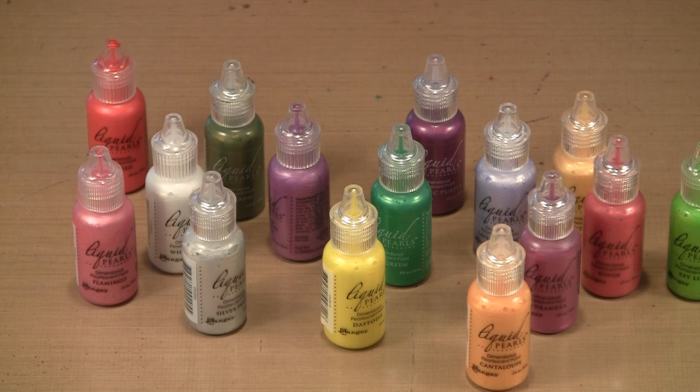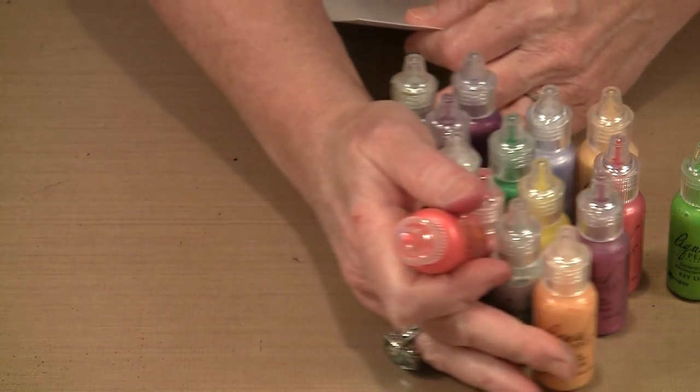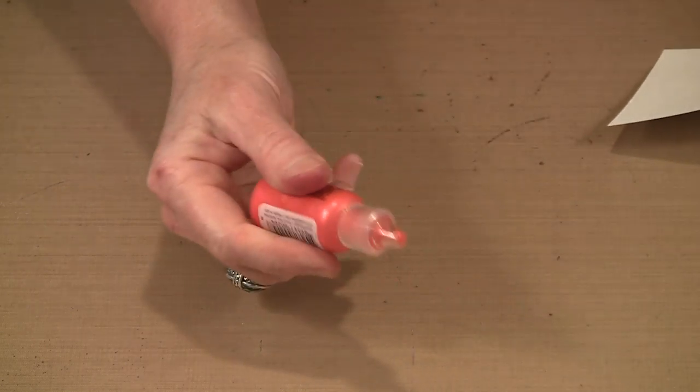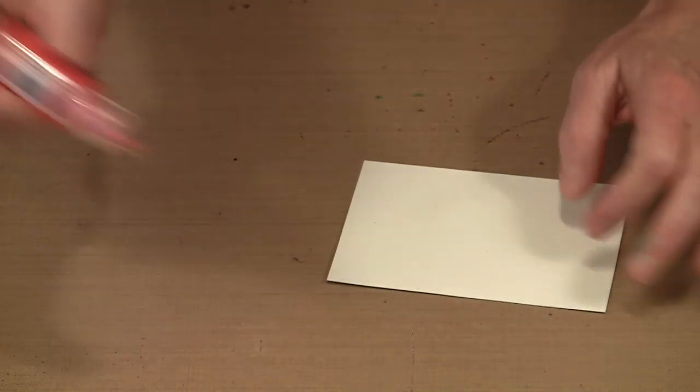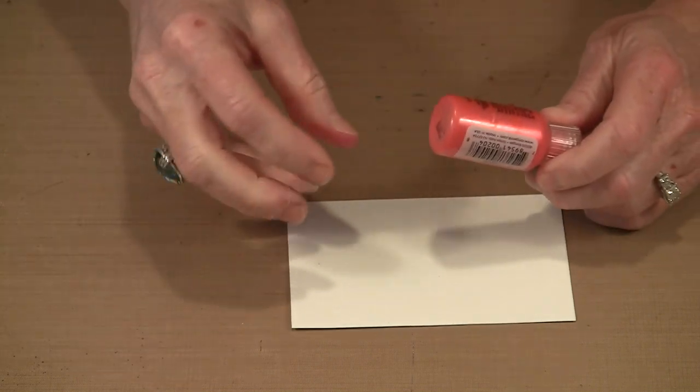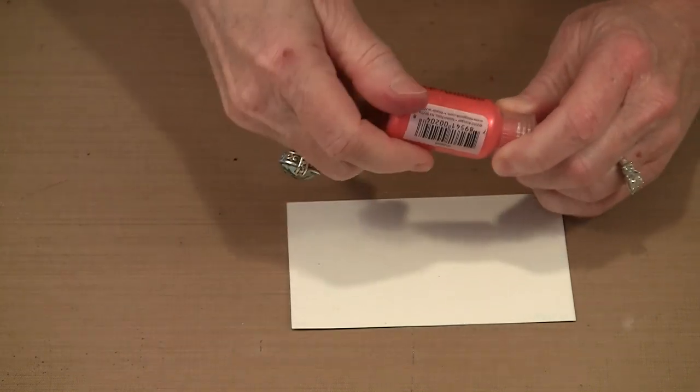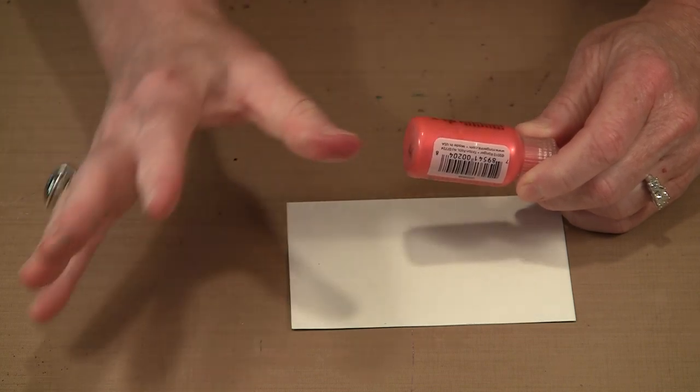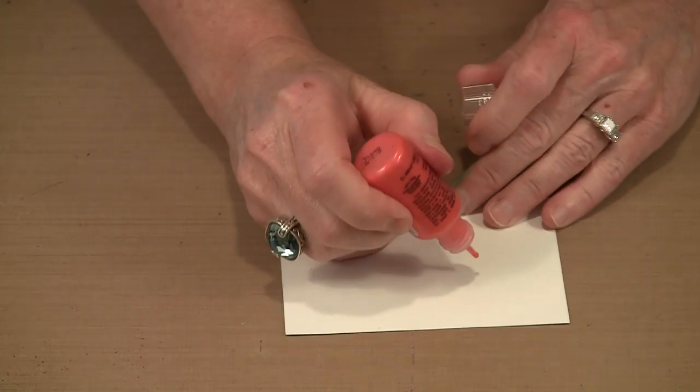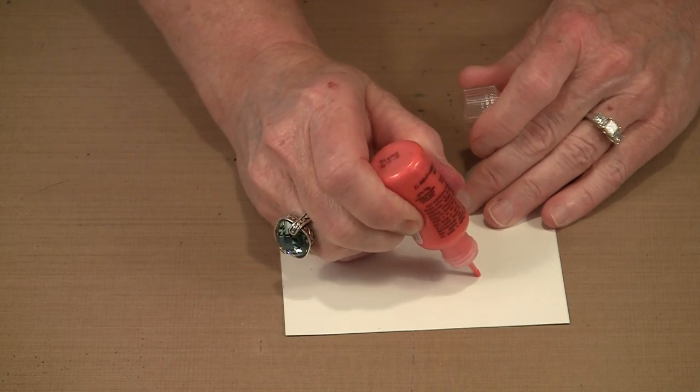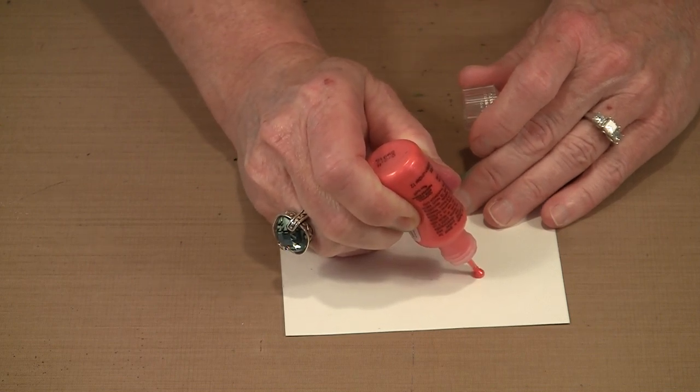So when I work with these, you don't have to shake the product. What you need to do is make certain that the product is down in that needle tip because you don't want to hit an air pocket that causes the product to spurt out. When you apply this, you can make big dots or little dots.